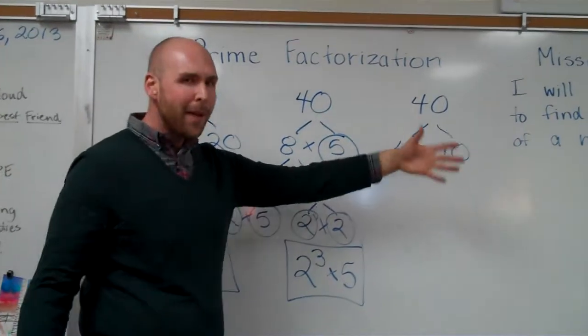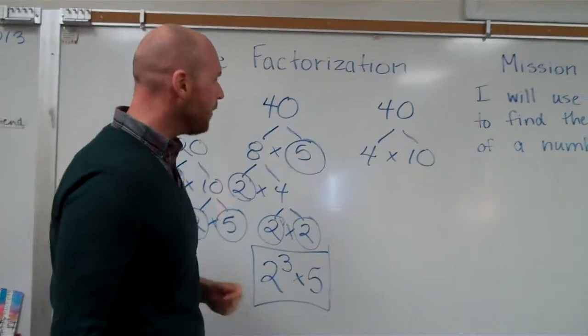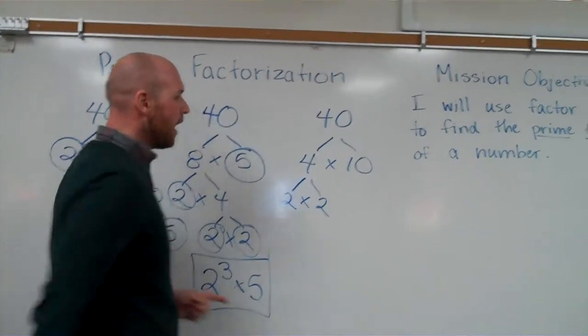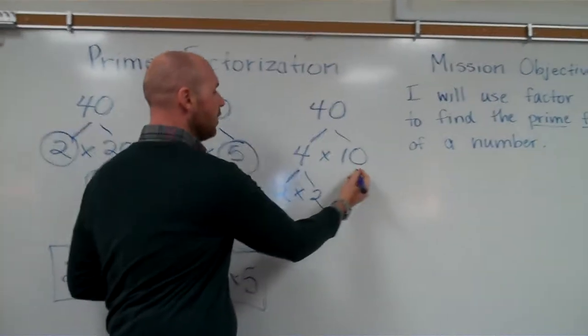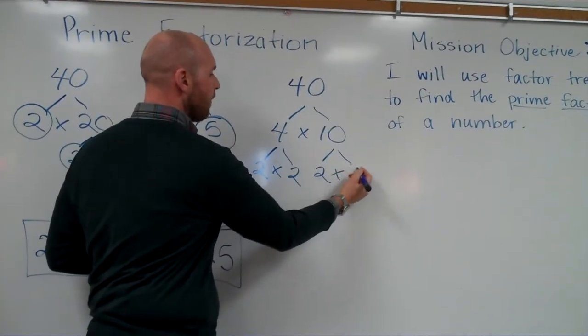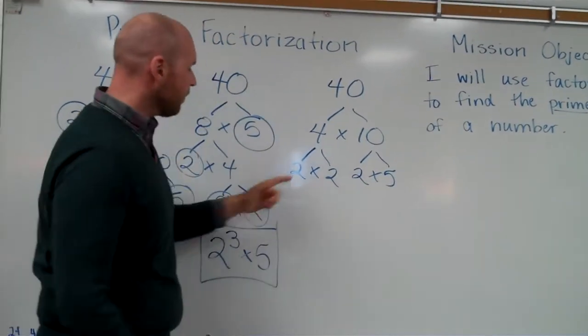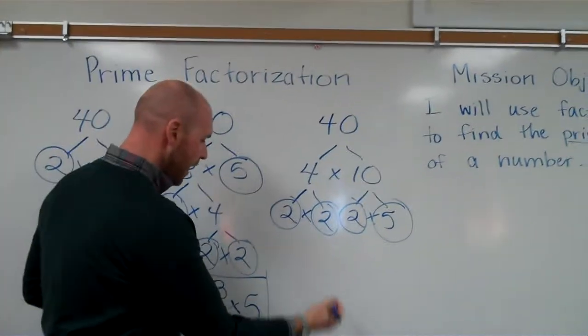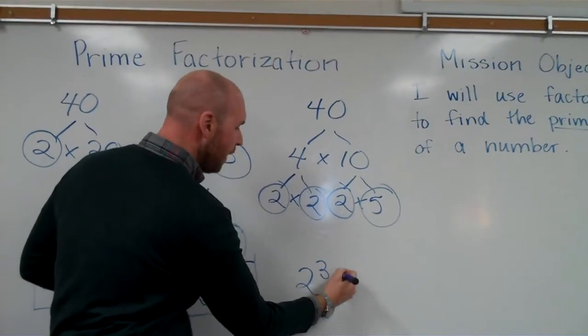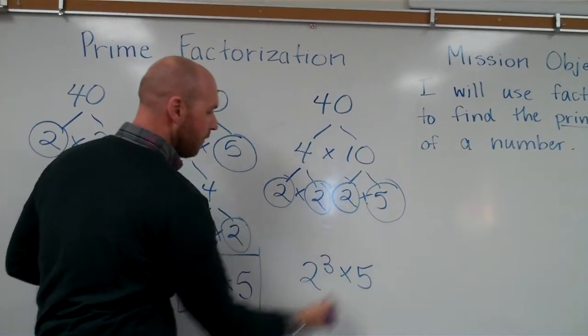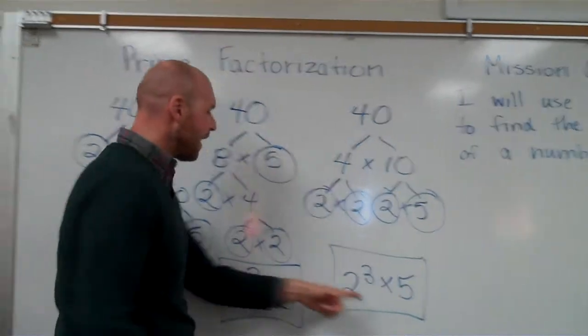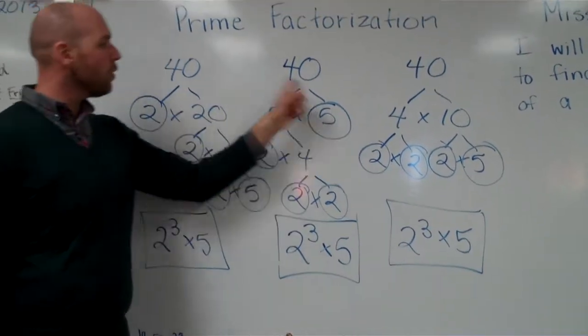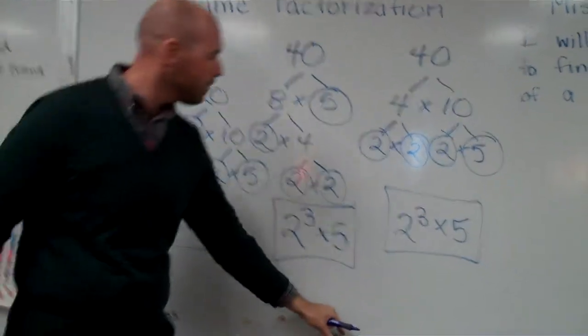Now let's move over here. Am I going to get the same thing? I don't know. How do I break apart 4? 2 times 2. How do I break apart 10? 2 times 5. Alright. I have 1, 2, 3 2's and 1 5. I get 2 to the third power times 5. I get the same answer each time. I get the same prime factorization each time no matter which path I decide to take.